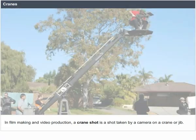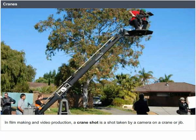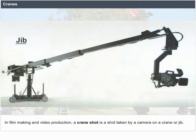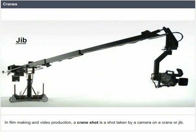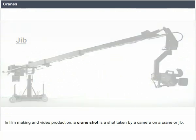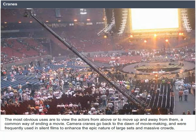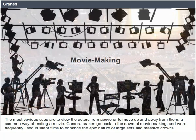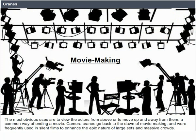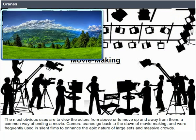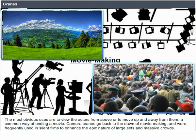Cranes. In filmmaking and video production, a crane shot is a shot taken by a camera on a crane or jib. The most obvious uses are to view the actors from above or to move up and away from them — a common way of ending a movie. Camera cranes go back to the dawn of movie making and were frequently used in silent films to enhance the epic nature of large sets and massive crowds.